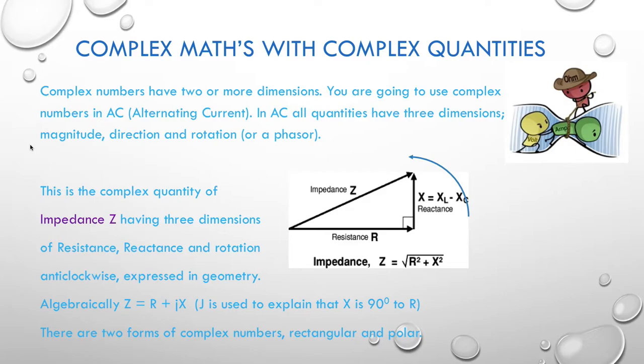Now complex maths and complex quantities. Complex numbers have two or more dimensions. You're going to use complex numbers in AC or alternating current. In AC all quantities actually have three dimensions: magnitude, direction and rotation. If you've only got magnitude and direction it's called a vector. But as soon as we add a third of rotation we call it a phasor. And you can see a diagram here in the centre of the page. And this is the complex quantity of impedance, Z, having three dimensions of resistance, reactance and rotation in an anti-clockwise direction.